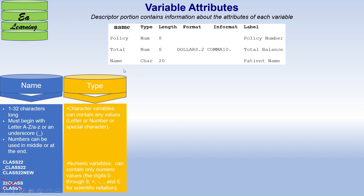The second attribute is type. There are two types of variables in SAS: character and numeric. A character variable can hold any value — letters, numbers, or special characters. A numeric variable can only hold numeric values, including digits 0–9, plus or minus signs, decimals, and scientific notation (e-notation).